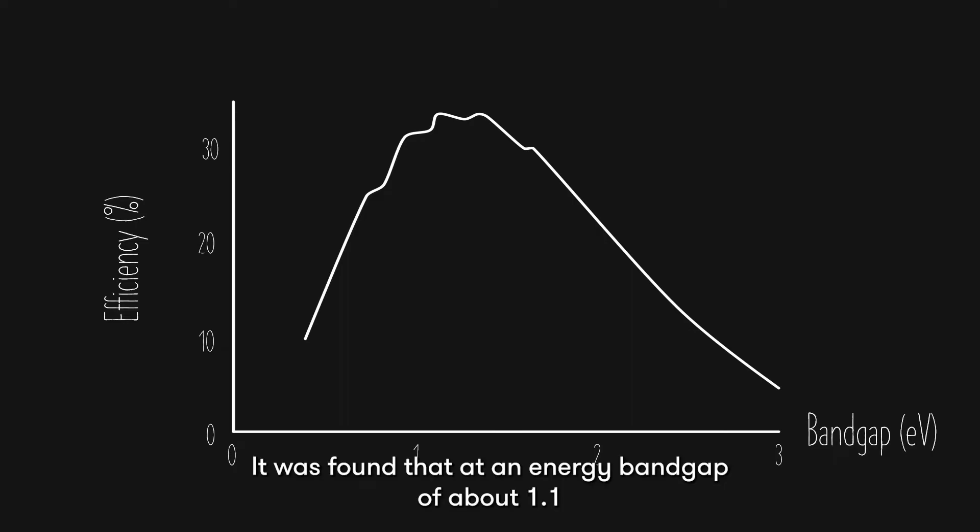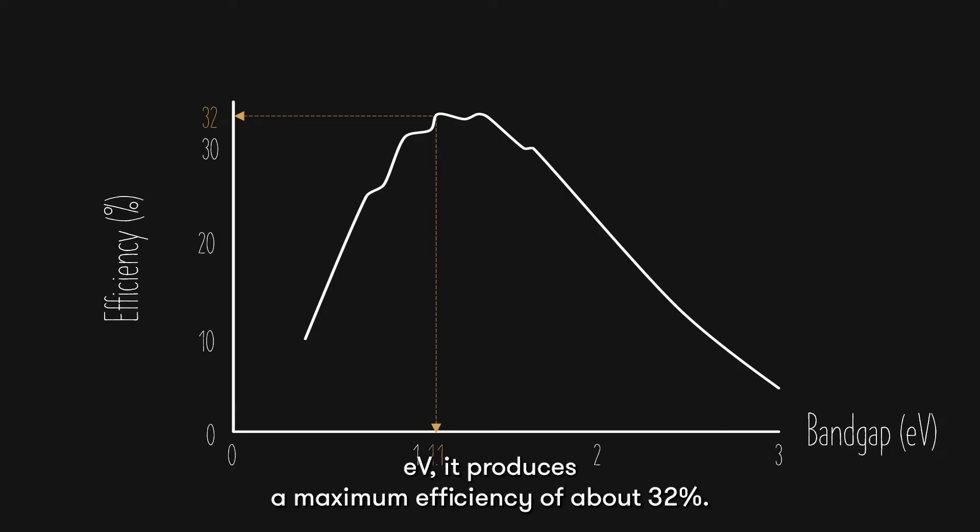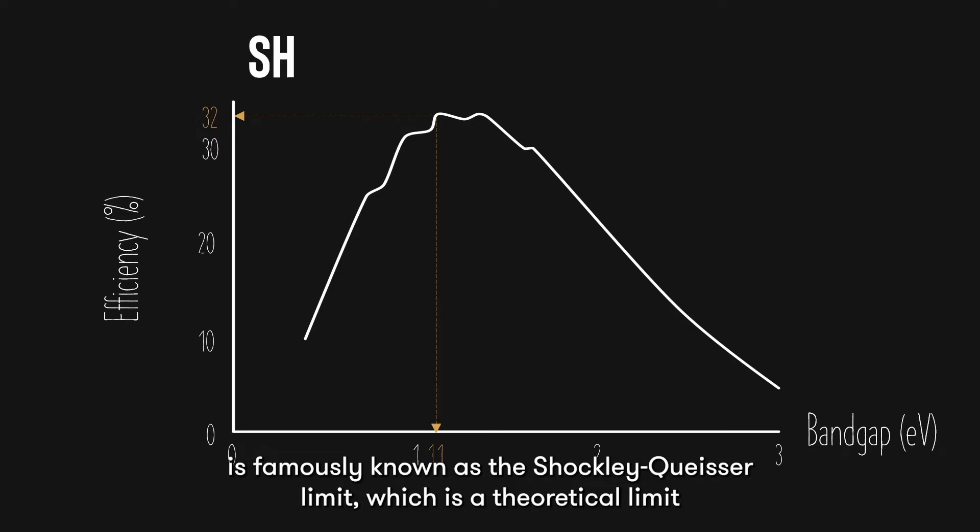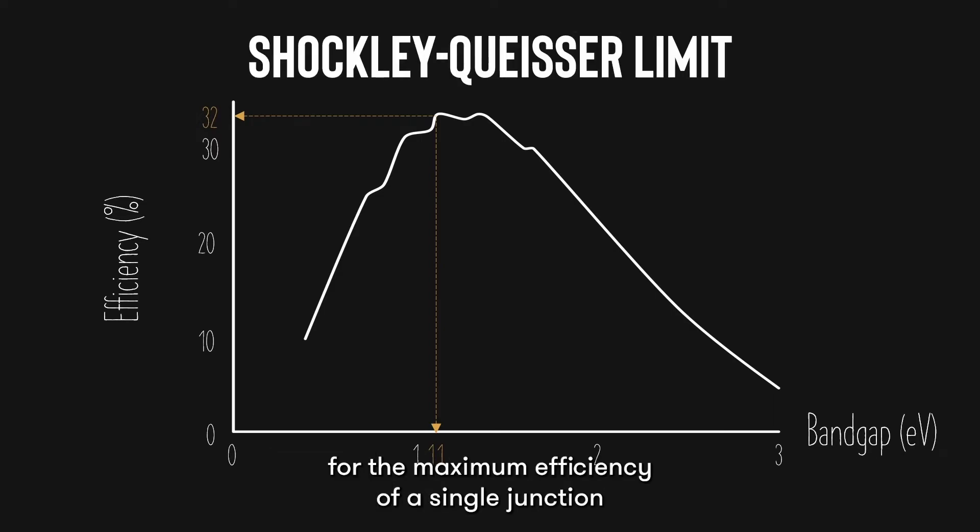It was found that at an energy band gap of 1.1 electron volts, it produces a maximum efficiency of about 32%. This 32% is famously known as the Shockley-Quaser limit, which is a theoretical limit for the maximum efficiency of a single junction solar cell due to the trade-off between current and voltage.